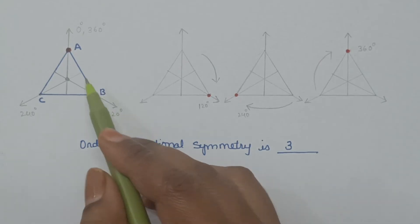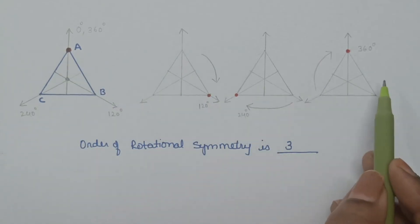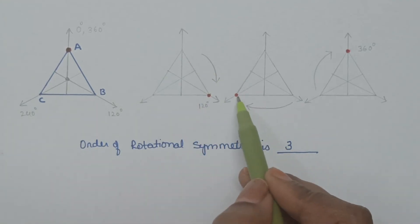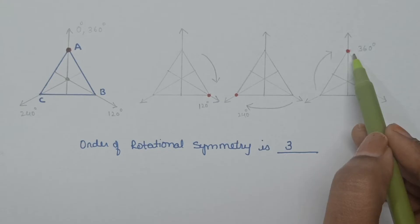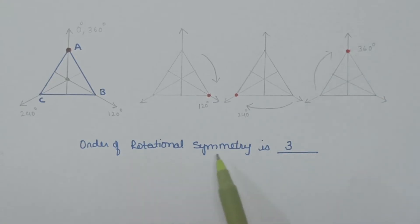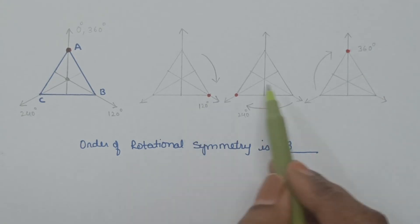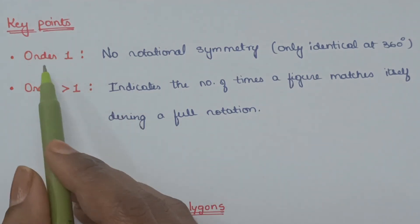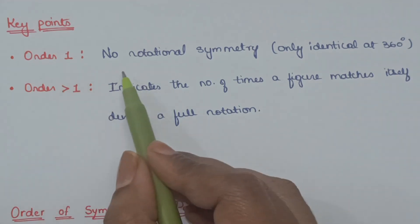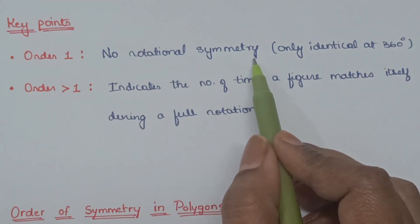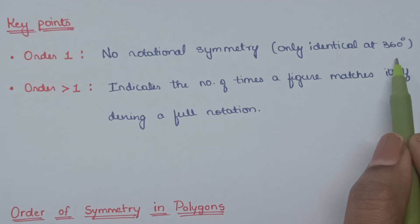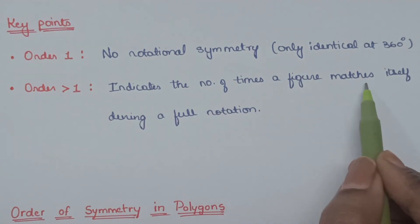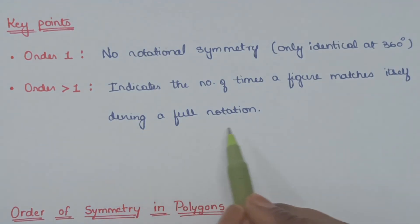When an equilateral triangle rotates, the images are identical to its pre-image at 120 degrees, 240 degrees, and 360 degrees. So the order of rotational symmetry is 3. Key points: if the order equals 1, there is no rotational symmetry — it is only identical at 360 degrees. An order greater than 1 indicates the number of times a figure matches itself during a full rotation.